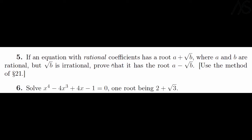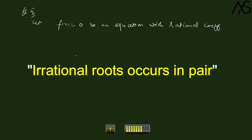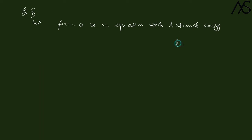If an equation with rational coefficients has a root a plus √b, where a and b are rational but √b is irrational, then we have to show it also has the root a minus √b. Rational coefficient means p/q where p and q are integers and q is non-zero. All such numbers — 1, 2, etc. — are rational.